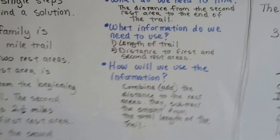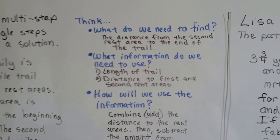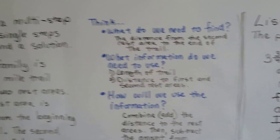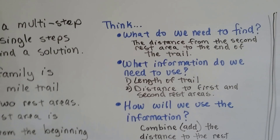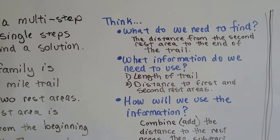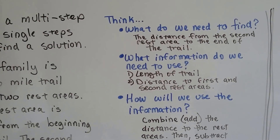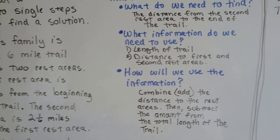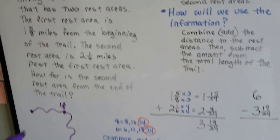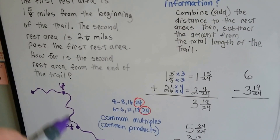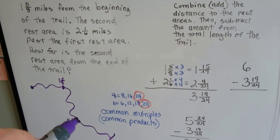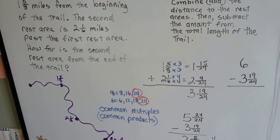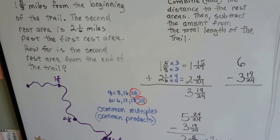What do we need to find? The distance from the second rest area to the end of the trail. What information do we need to use? We need the length of the trail and the distance to the first and second rest areas. How will we use the information? We can combine these two measurements and then subtract them from the total length of the trail, and then we'll know this piece right here.